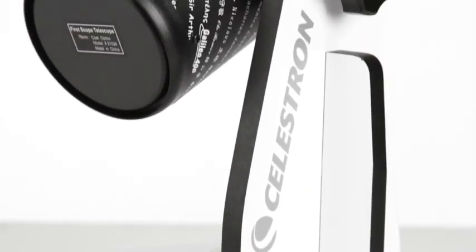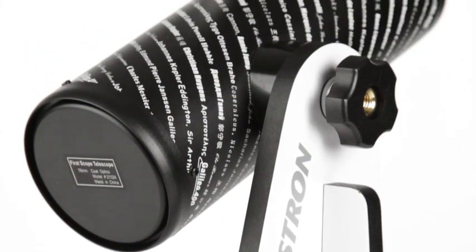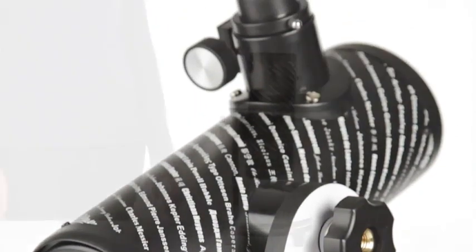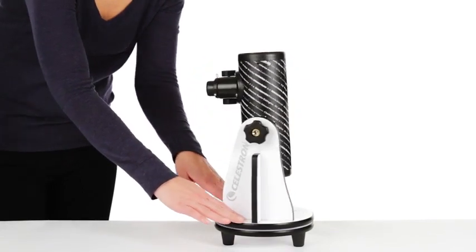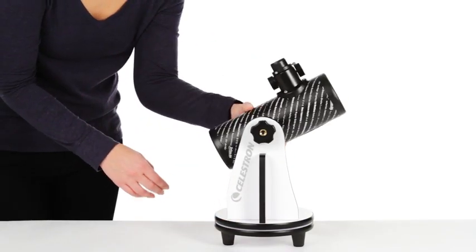The tabletop Dobsonian-style mount makes pointing the telescope at objects smooth and easy. Just rotate the telescope base, then loosen the knob and point the scope towards the object.